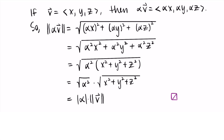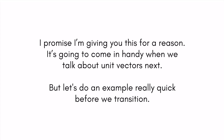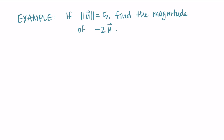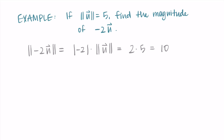Understanding the proof might not be critical right now, but if you're taking more math classes where you write proofs, it's nice to see these things. This property comes in handy when we talk about unit vectors. For example, if you know the magnitude of vector u is 5 and you want the magnitude of −2u: the magnitude of −2u equals the absolute value of −2 times the magnitude of u, which is 2 × 5 = 10.